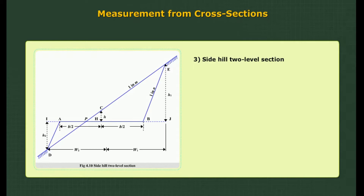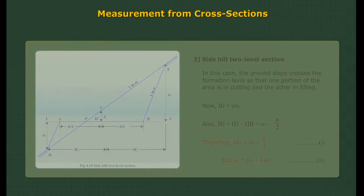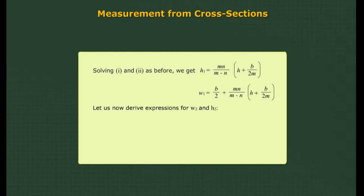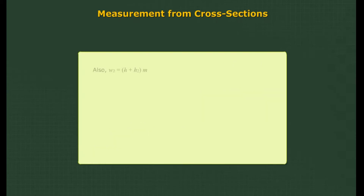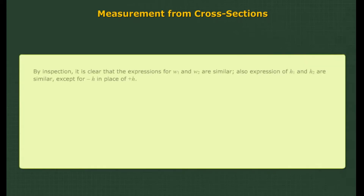Side hill two-level section: In this case the ground slope crosses the formation level so that one portion of the area is in cutting and the other in filling. Solving equations 1 and 2 as before we get the result. By inspection, it is clear that the expressions for W1 and W2 are similar, and the expressions for H1 and H2 are similar except for minus H in place of positive H.